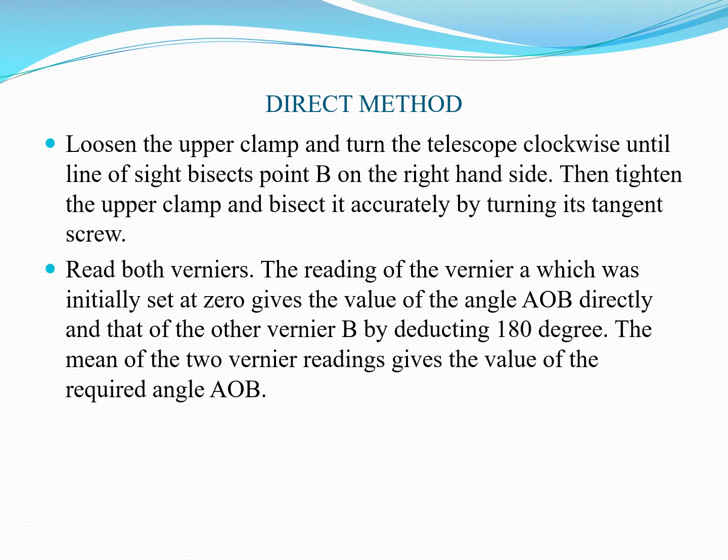After that, loosen the upper clamp and turn the telescope clockwise until the line of sight bisects the ranging rod at point B on the right-hand side. Then tighten the upper clamp and bisect point B accurately by turning the horizontal tangent screws, bisecting the ranging rod at point B accurately.